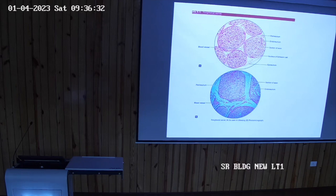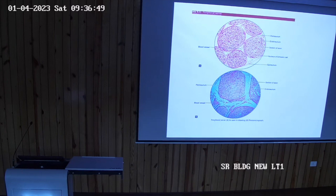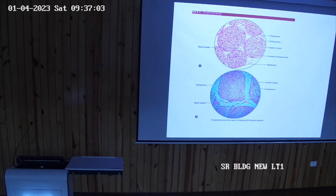Similar to muscle, which consists of bundles of muscle fibers, in the peripheral nerve it consists of bundles of nerve fibers. The bundle of nerve fibers is called a fascicle. So this is the transverse section of the peripheral nerve, consisting of a large number of fascicles.